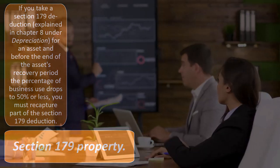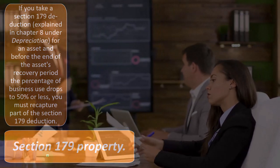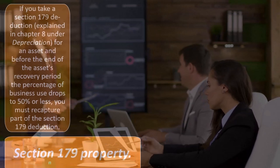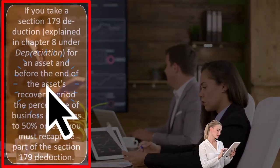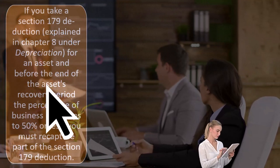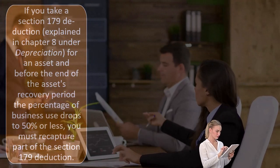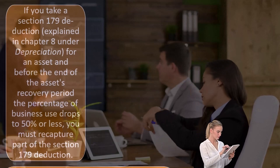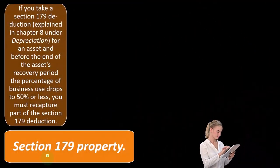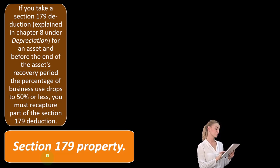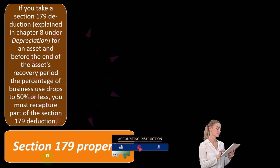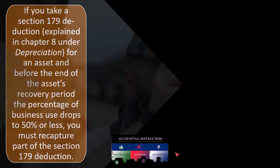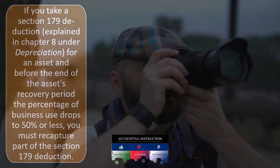Then we've got the Section 179 property. If you take a Section 179 deduction, that's an accelerated kind of depreciation situation where you get to take more of the benefits in the first year of purchase typically — explained in chapter eight under depreciation. For an asset, before the end of the asset's recovery period, if the percent of business use drops to 50% or less, you must recapture part of the Section 179 deduction.